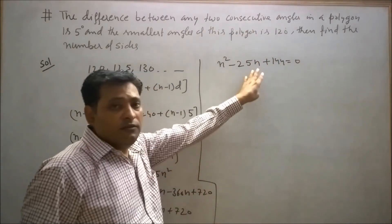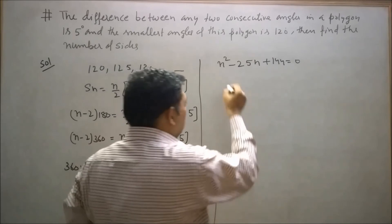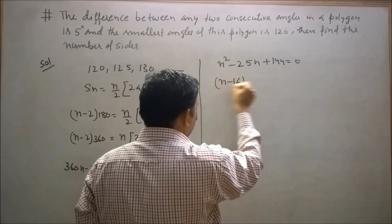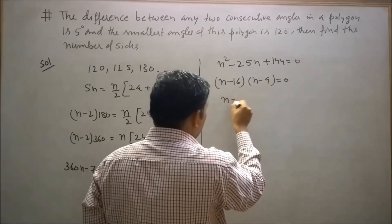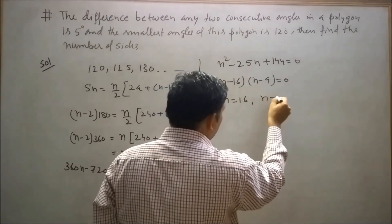We get n² - 25n + 144 = 0. By splitting the middle term we get two factors: (n - 16)(n - 9) = 0. So n can be 16 or n can be 9.